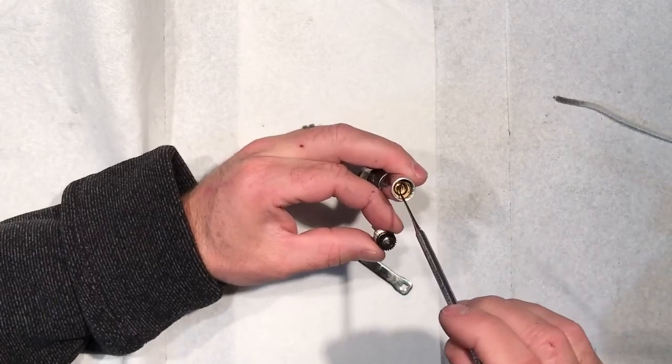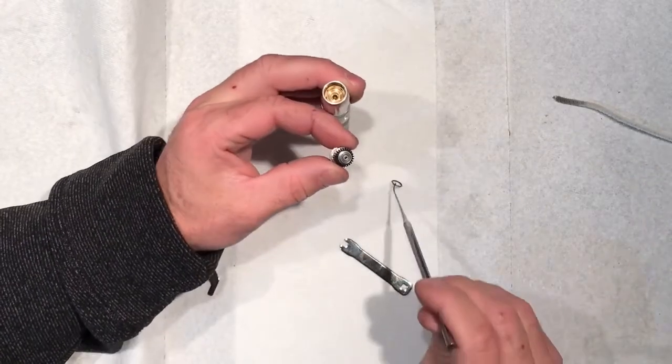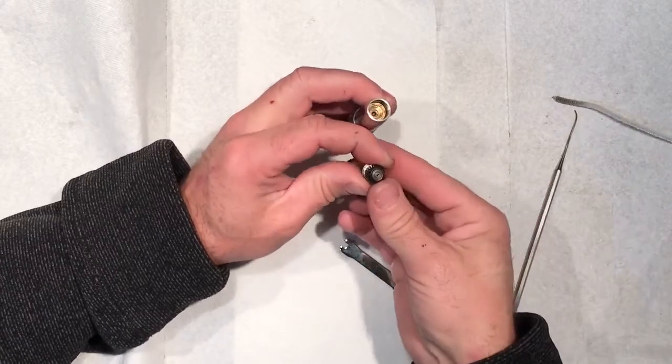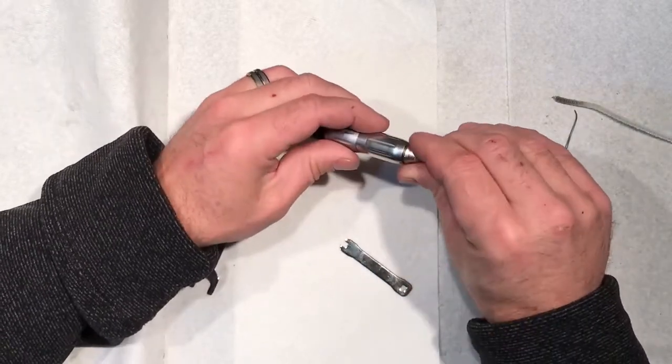As you can see down in the handpiece here, the o-ring is there. I'm going to pull the o-ring out, put the o-ring on the back bearing, and then I'm going to insert the cartridge in, finger tight.